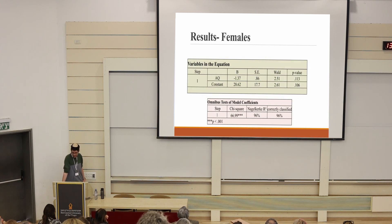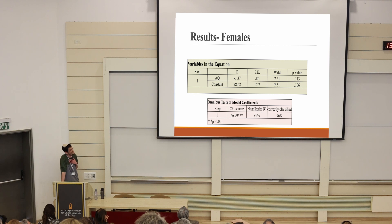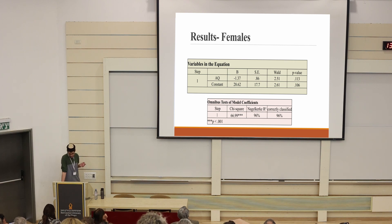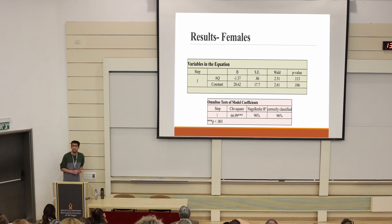For females, the logistic regression model did not show any significant predictors. Although the AQ was entered into the model, it was not significant. However, the correct classification rate remained high at 96%, very similar to the rates for males and the entire sample. It is possible that the lack of significant predictors for females is due to the relatively small sample size, and further research with larger samples is needed to better understand the effectiveness of AQ and RQ for females.